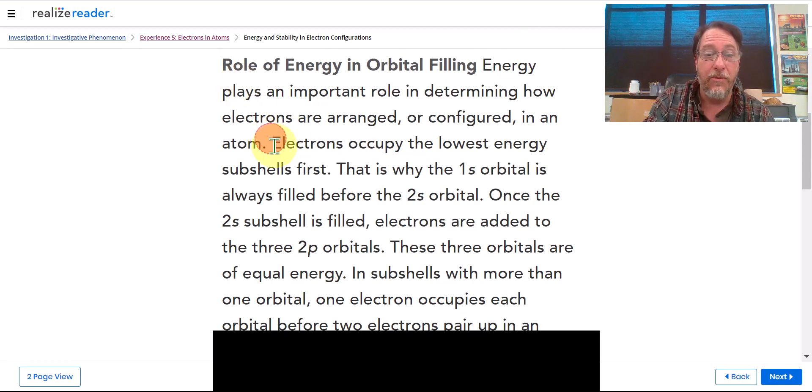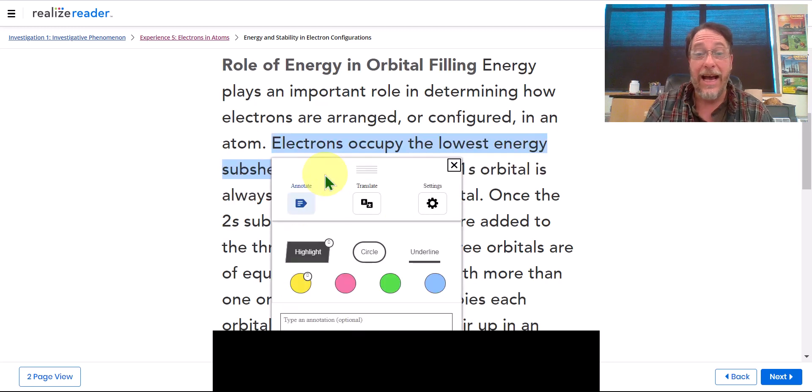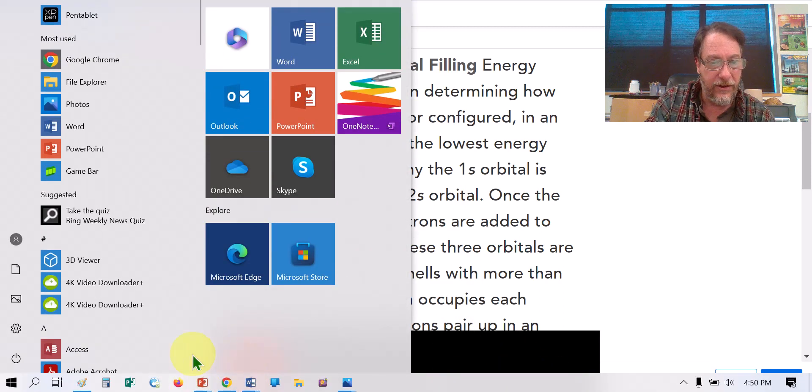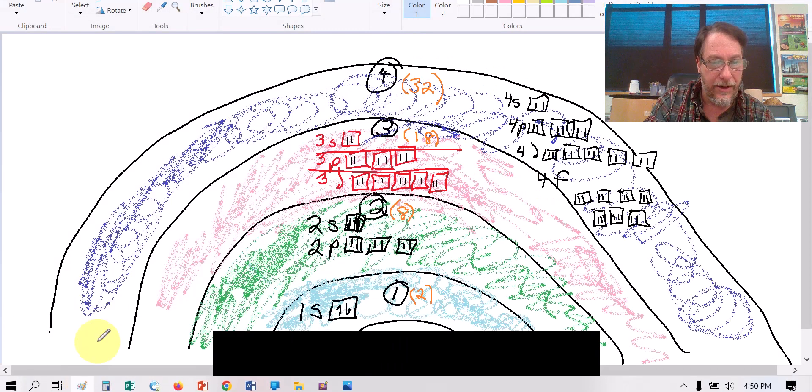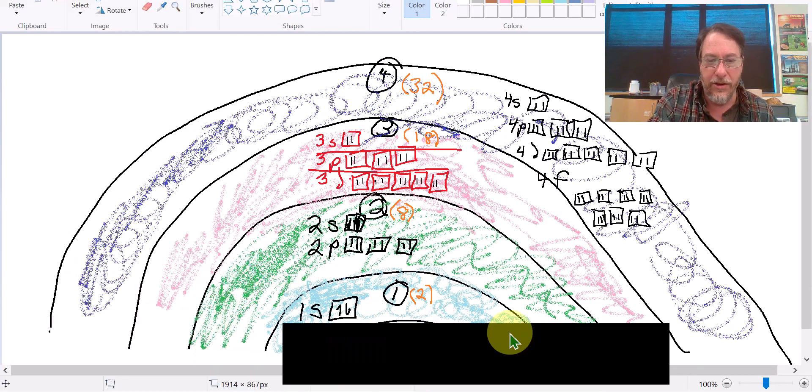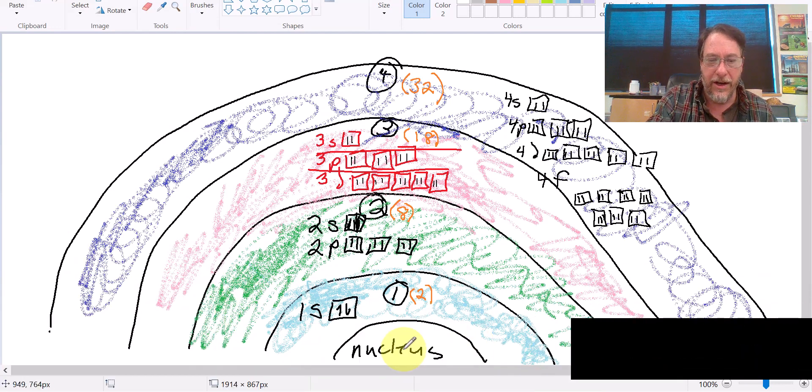When you're putting in electrons, electrons occupy the lowest energy subshell first. Let's look at what I'm talking about. If I have sort of an atom filled out here, this is the nucleus over here at the bottom, and then you have level 1 with its two electrons, level 2 with its eight electrons, level 3 and level 4.